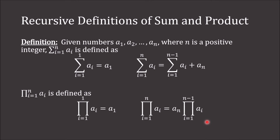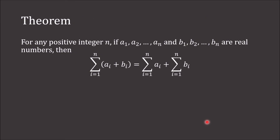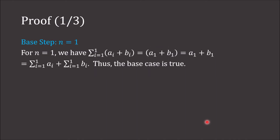We will now prove that the sum from i equals 1 to n of (a sub i plus b sub i) equals the sum from i equals 1 to n of a sub i plus the sum from i equals 1 to n of b sub i, using induction. For n equals 1, the sum from i equals 1 to 1 of (a sub i plus b sub i) is simply a sub 1 plus b sub 1, which equals the sum i equals 1 to 1 of a sub i plus the sum i equals 1 to 1 of b sub i. Thus the base case is proven.